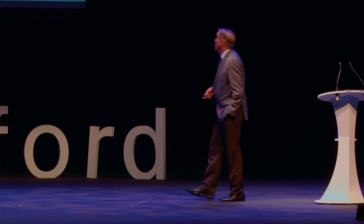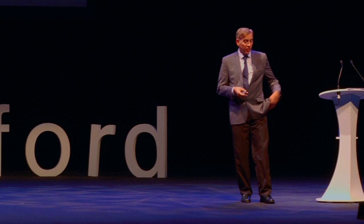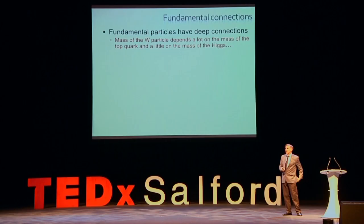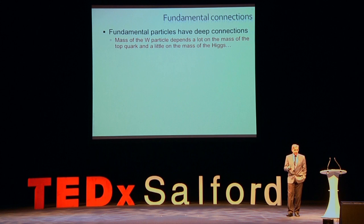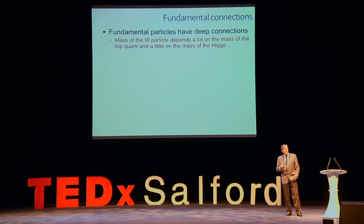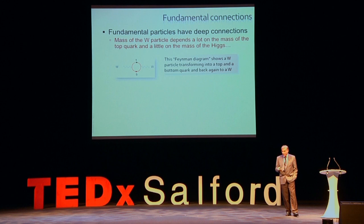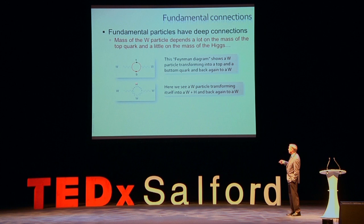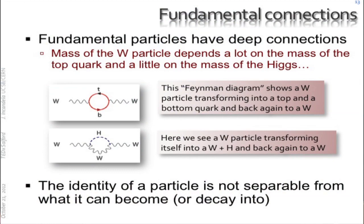There are fundamental connections between particles — this is where it gets kind of interesting. Fundamental particles actually all interact with each other all the time through these virtual interactions. The mass of the W particle, for instance, depends a lot on the mass of the top quark and a little bit on the mass of the Higgs. A W can decay into a top and a bottom quark and then those can fuse back together and become a W again. A W can radiate a Higgs and reabsorb it. The identity of any elementary particle is really not separable from what it can become or decay into. This is how the universe works at a very basic level.